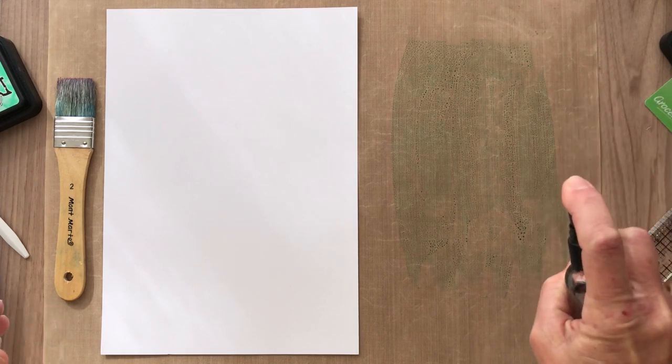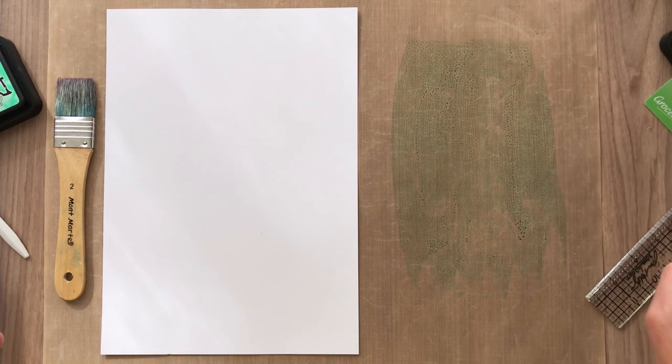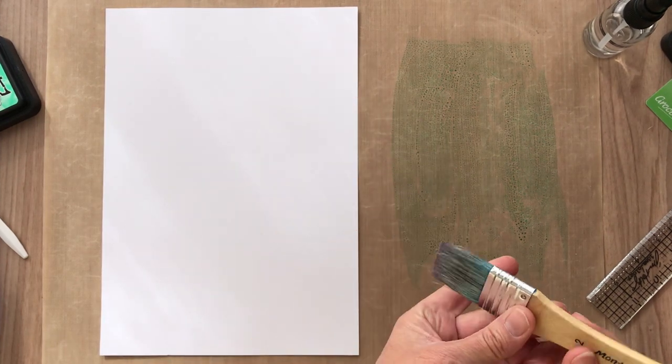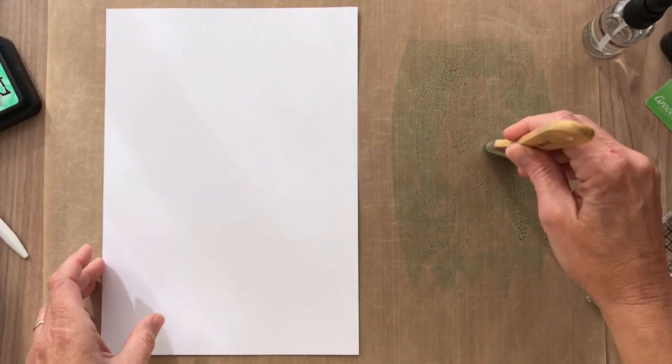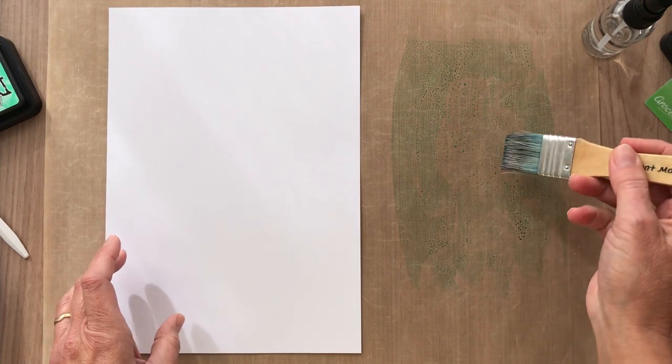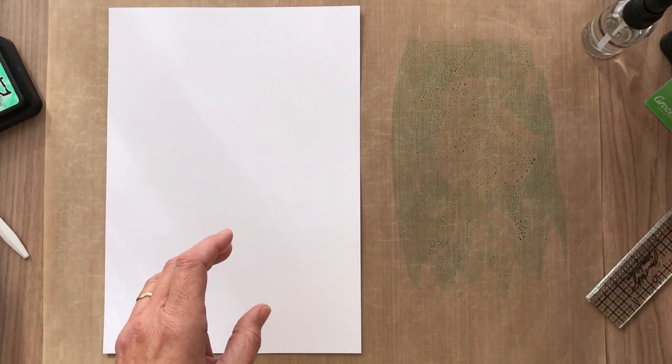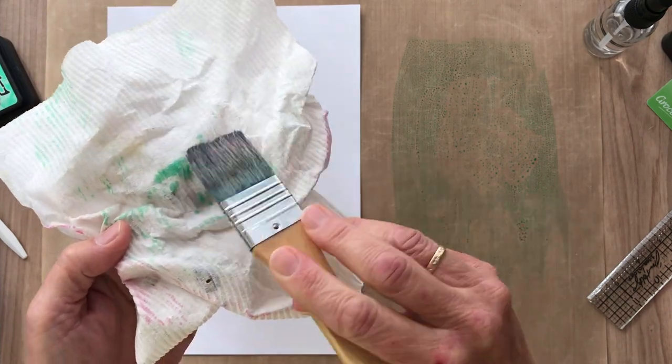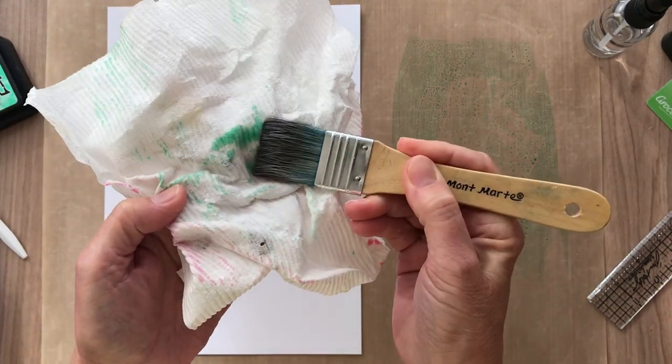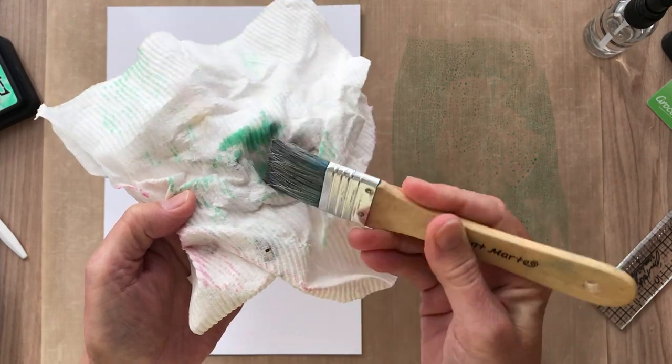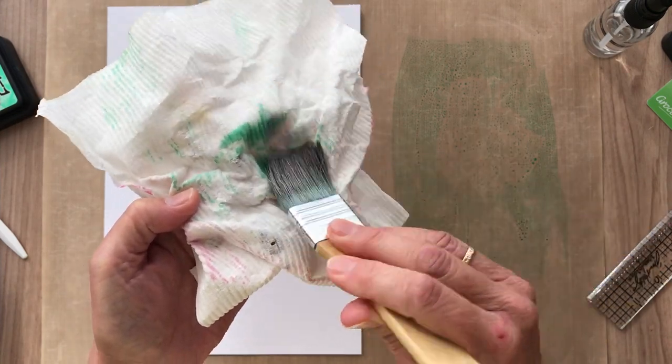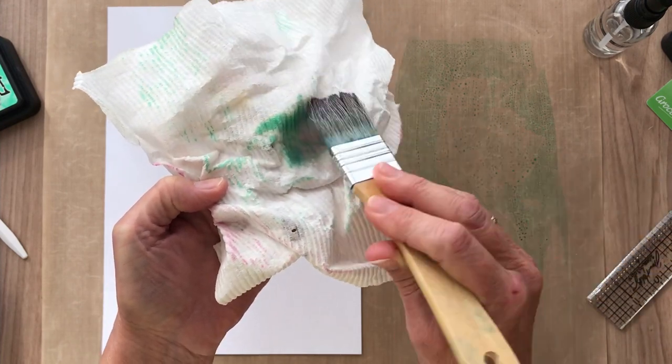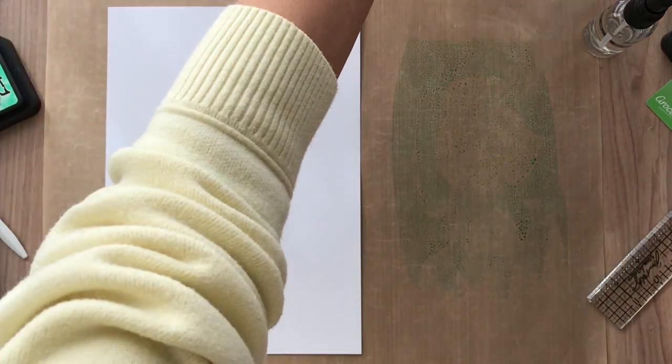You don't need too much water for this technique, just a little bit. I'm going to grab my brush that's already damp. Make sure you haven't got too much water in your brush. I'll just dab some of that off. You don't want too much water, you just want it damp, not really wet.